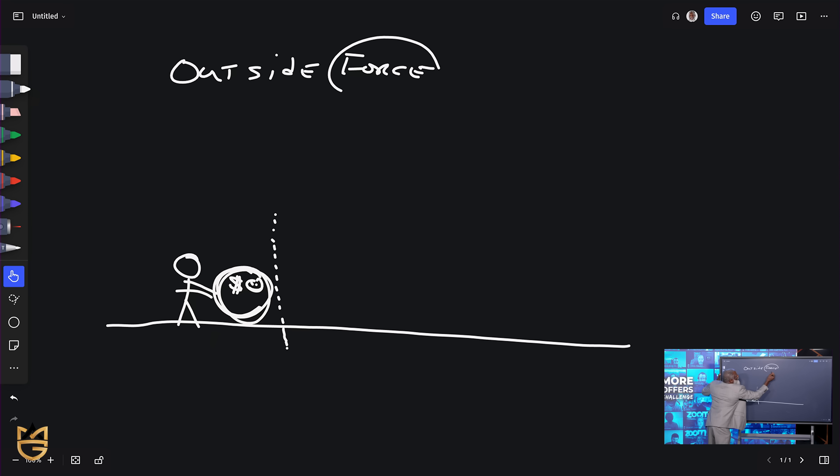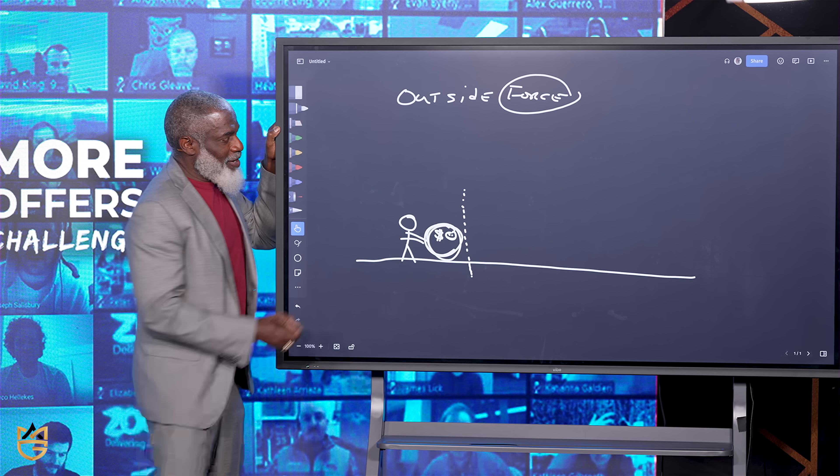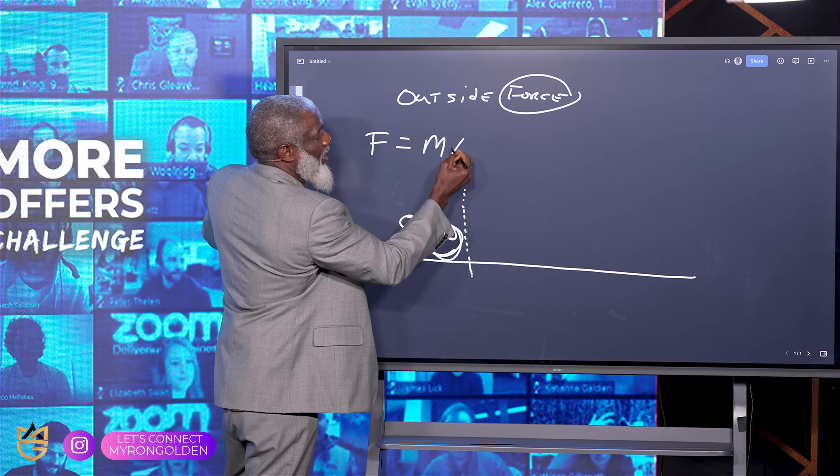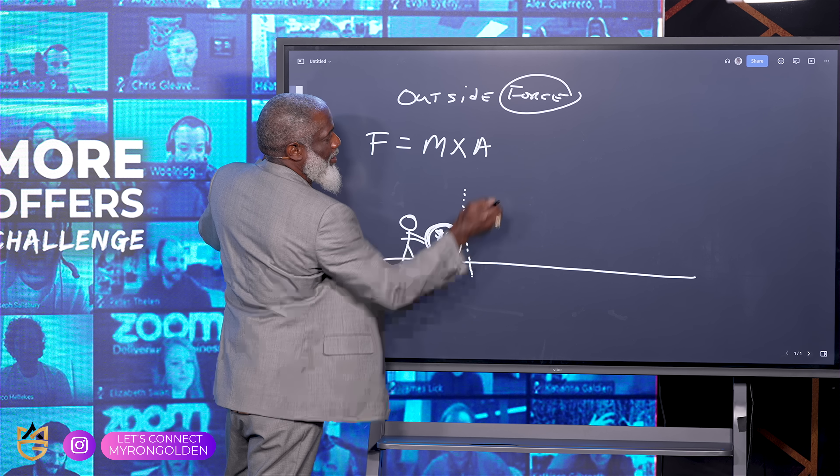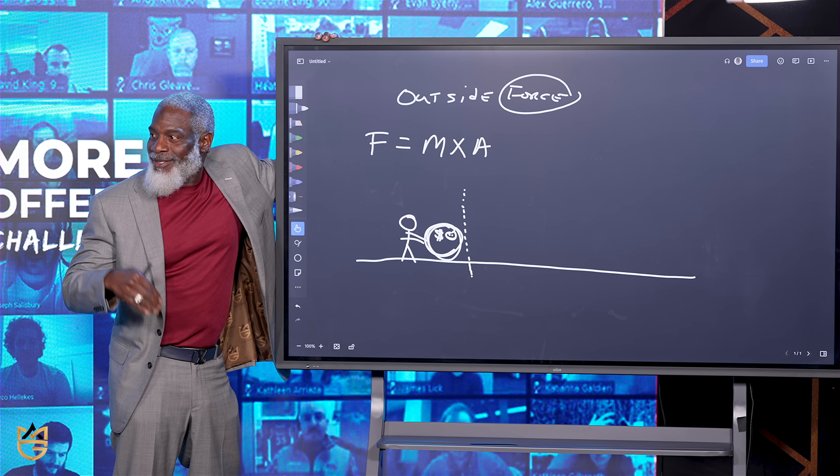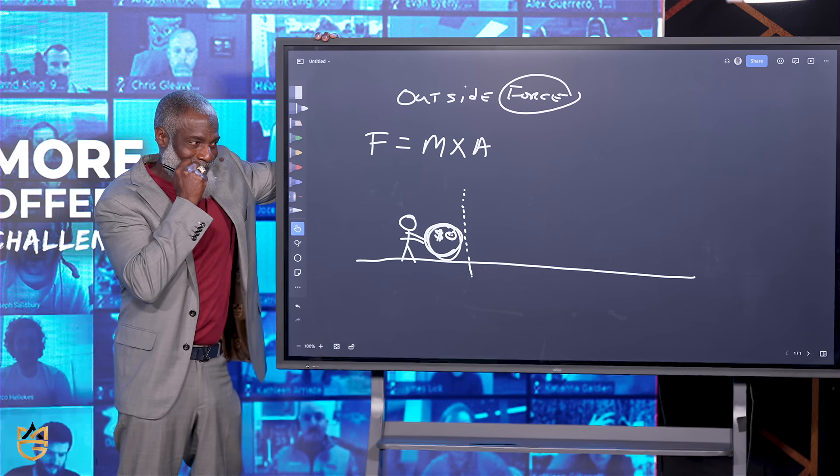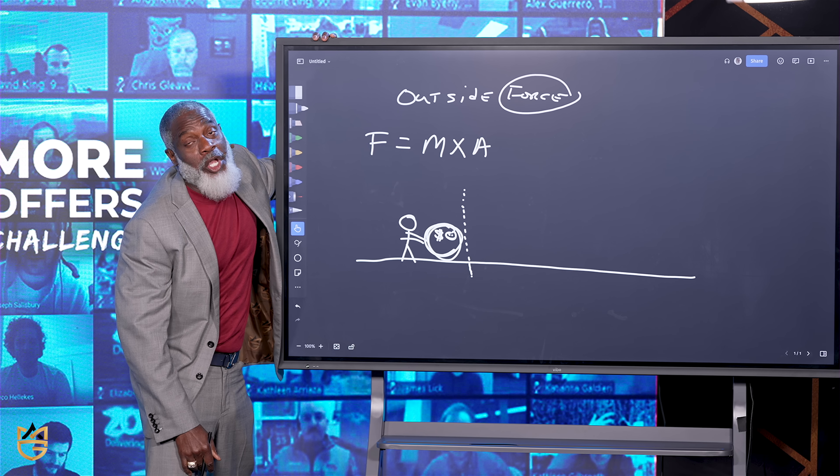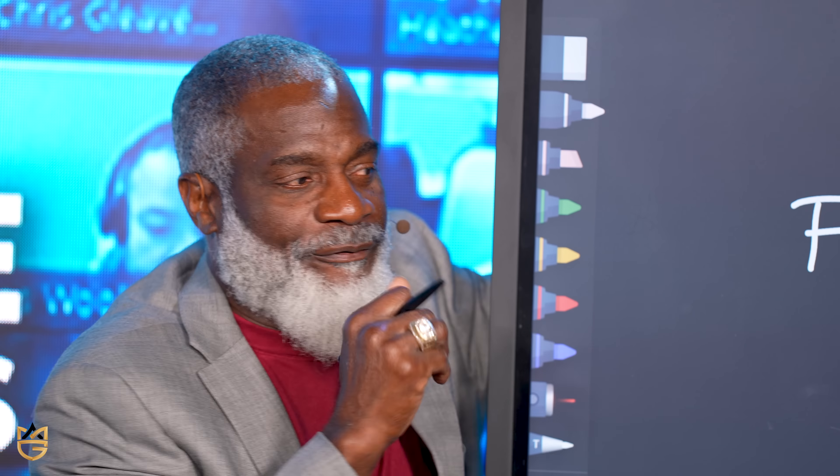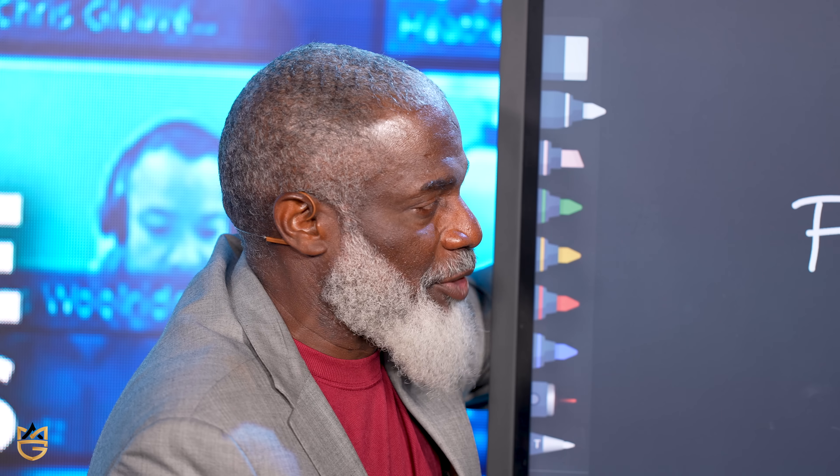Now this is an interesting word because it's another scientific word. So what's the formula for force? Force equals M times A. What does that mean? Force equals mass times acceleration. Now I know some of y'all are like, why is he talking to me about science? Because this is how life works.